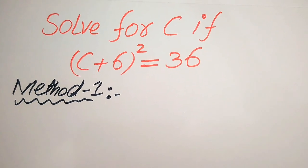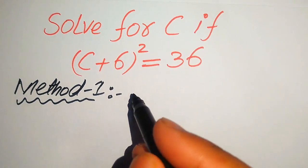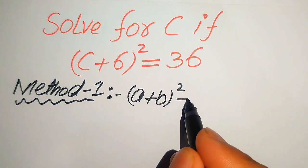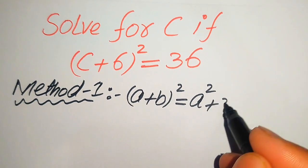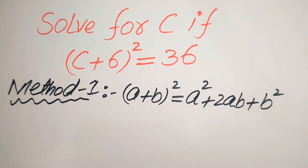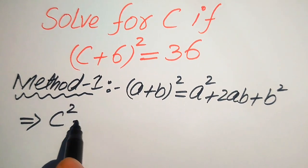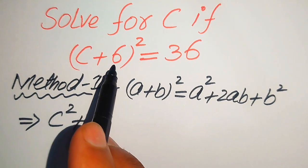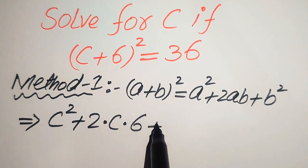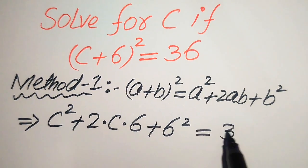In the first method we need to expand the left hand side of the given equation. For this we use the formula: (a + b)² = a² + 2ab + b². According to this formula we expand the left hand side: c² + 2·c·6 + 6² = 36.